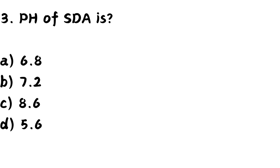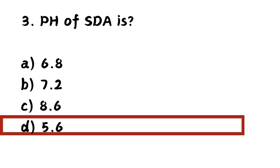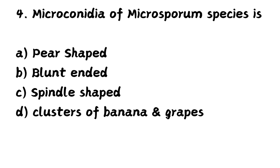Question number three: pH of SDA — that is, pH of Sabouraud dextrose agar. Option A: 6.8, Option B: 7.2, Option C: 8.6, Option D: 5.6. The right answer is Option D — 5.6. The pH of SDA is 5.6.